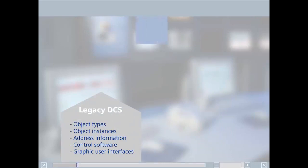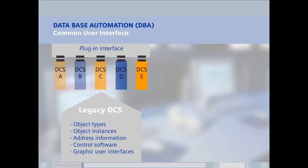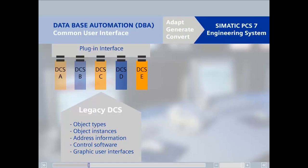We have created an internal development platform for this process — Database Automation, or simply DBA. With the aid of a plug-in interface, the configuration data can be read in from any process control system and displayed and configured using a standardized user interface. This technique creates a universally valid migration infrastructure that permits simple docking to different process control systems, thanks to the modular architecture.